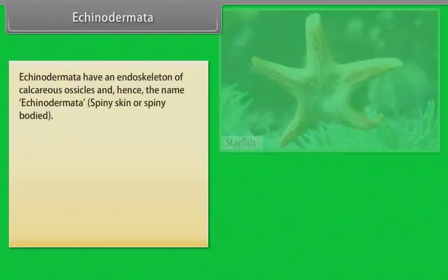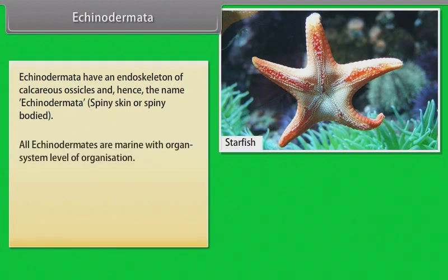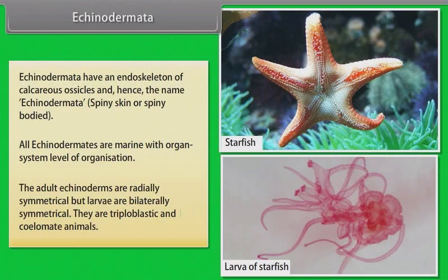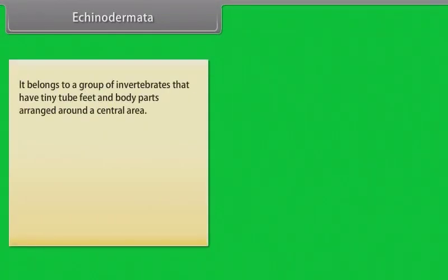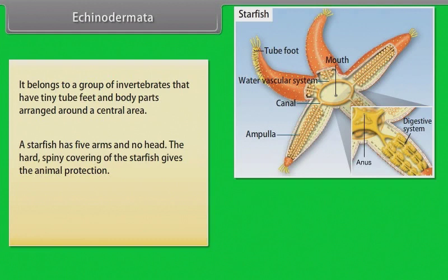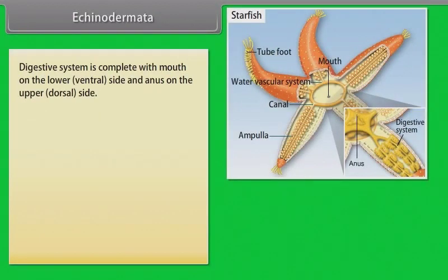Echinodermata have an endoskeleton of calcareous ossicles, and hence the name Echinodermata, which means spiny skin or spiny bodied. All Echinodermata are marine with organ system level of organization. The adult Echinodermata are radially symmetrical, but larvae are bilaterally symmetrical. They are triploblastic and coelomate animals belonging to a group of invertebrates that have tiny tube feet and body parts arranged around a central area. A starfish has five arms and no head; its hard spiny covering provides protection. A sea urchin belongs to the same group and its body is covered with spines. The digestive system is complete with the mouth on the lower ventral side and anus on the upper dorsal side.